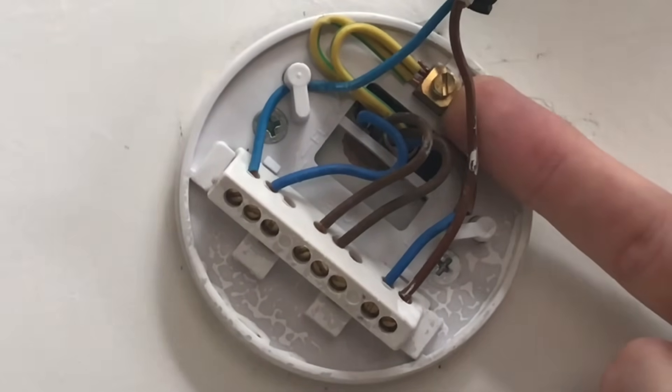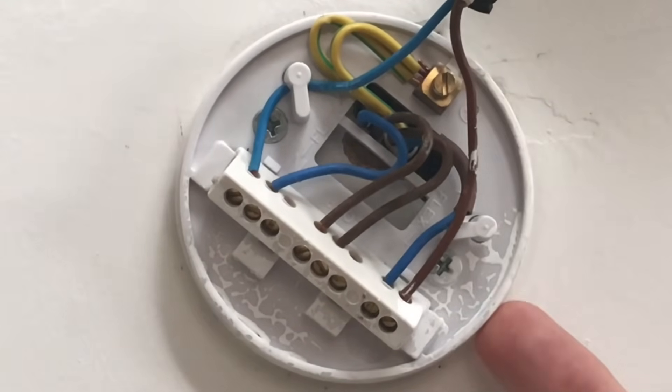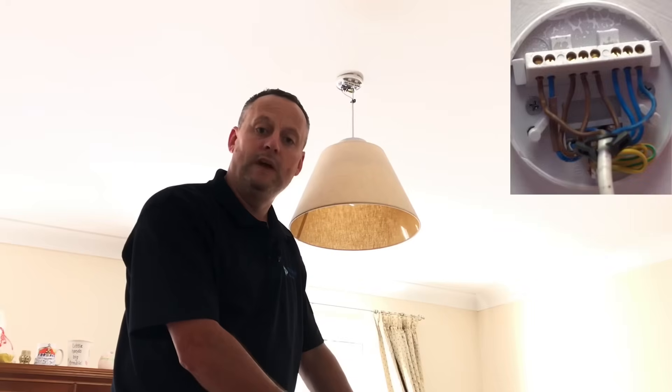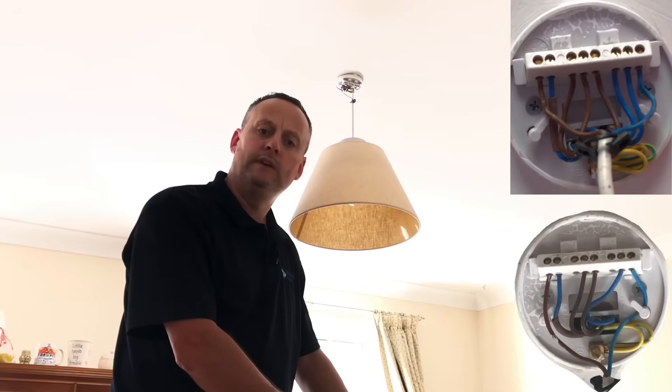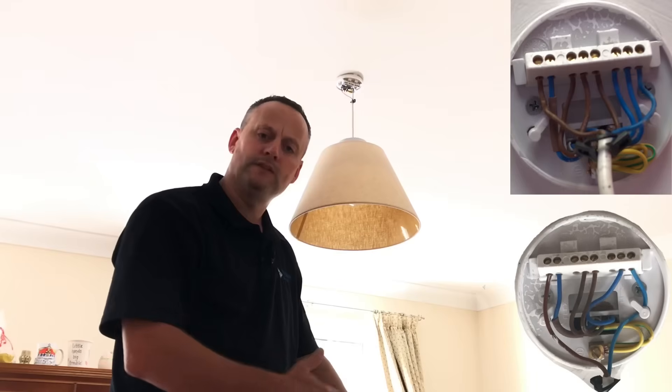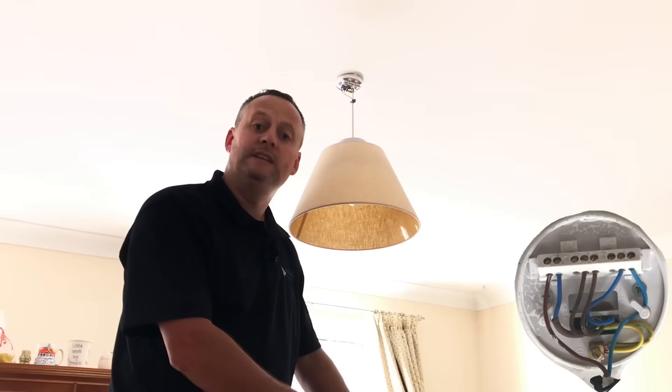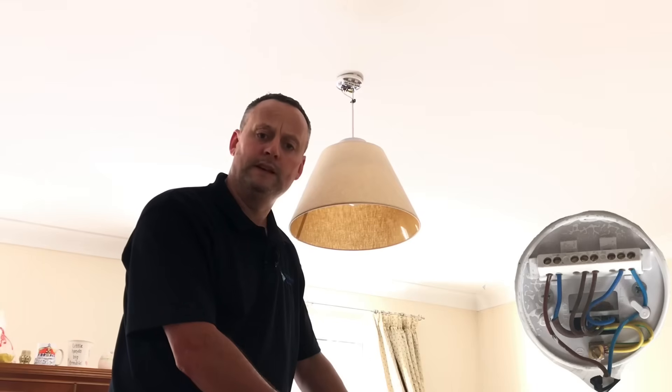So we looked at two different lighting points on the lighting circuit. We looked at one part way through the circuit where the supply came into the ceiling rose and then the supply was taken out to another room. And then we finished off by looking at one at the end of the radial circuit where the supply only came in and didn't continue on to any other part of the circuit. Actually finished at that point, so therefore was the furthest point in the radial circuit.